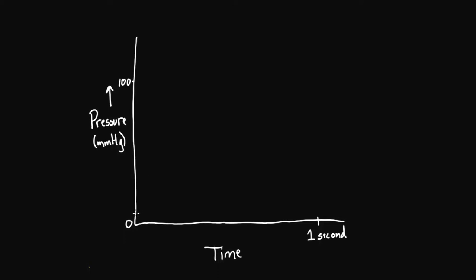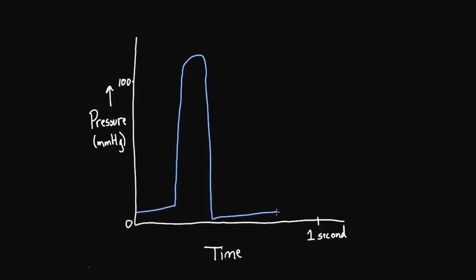Let's start with the left ventricle. The left ventricular pressure kind of rises steadily, and then it contracts really hard, having this huge contraction which increases the pressure dramatically. Then it bottoms out as the left ventricle relaxes, and slowly picks up again as more blood fills in. And of course, you also have your aortic pressure, which I'll put in yellow — it's actually slowly drifting down, and then picks up along with the left ventricle.